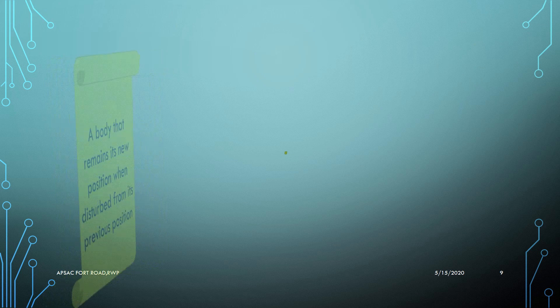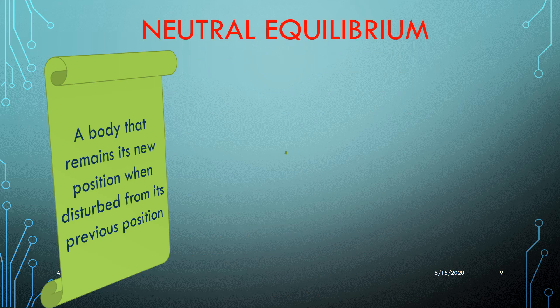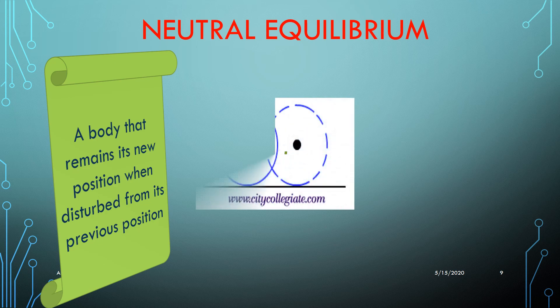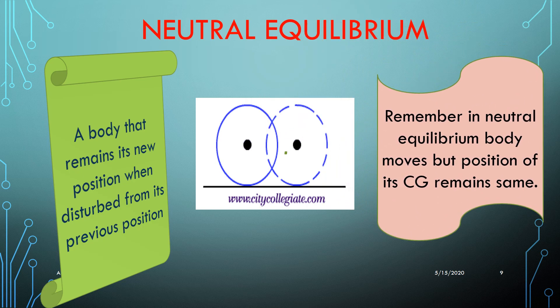If a body remains in its new position when disturbed from its previous position, this state is called neutral equilibrium. In neutral equilibrium, all new states the body is moved to are stable states. The center of gravity of the body remains at the same height irrespective of its new position. Examples of objects with neutral equilibrium include a ball, a sphere, a roller, a pencil lying horizontally, and an egg lying horizontally on a flat surface. In neutral equilibrium, the body moves but the position of the center of gravity remains the same.